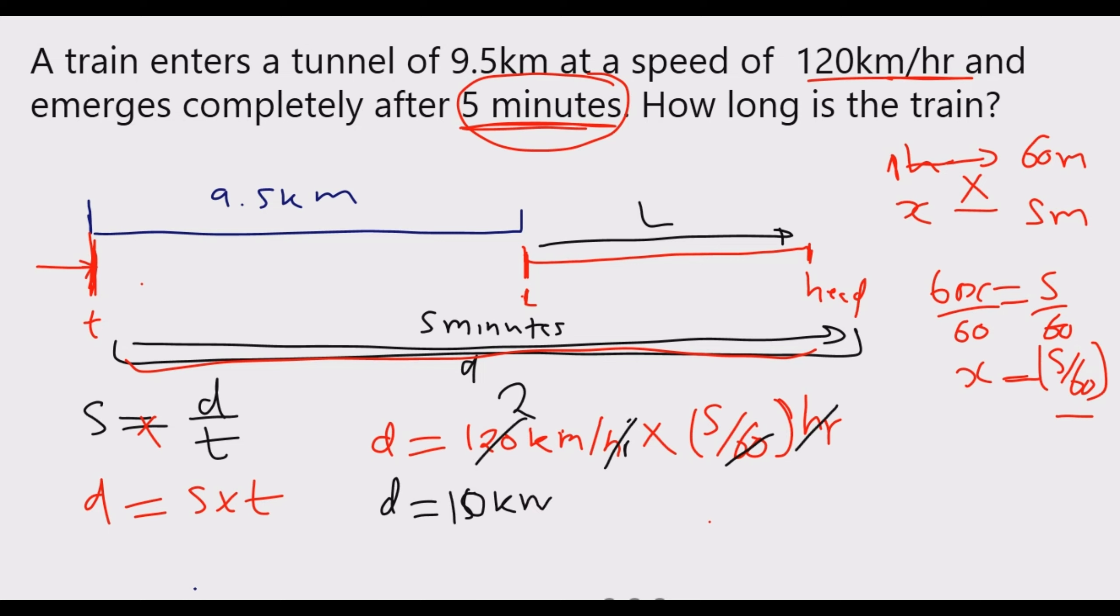This 10 kilometers is from here to there. Then we know that 9.5, which is the length of the tunnel, plus L, which is the length of the train, must give us 10. So L is equal to 10 minus 9.5. Once this 9.5 crosses the equal sign it becomes negative. So L is equal to 0.5 kilometers.